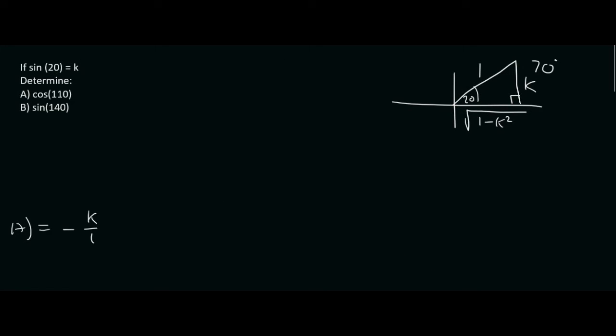Moving on to B, that's the sin of 140. So, we don't even look at our triangle for now. What we do is we just go and rewrite 140 as either 180 minus, 180 plus, or 360 minus. So, that's going to be 180 minus, now 180 minus what gives you that, it's 180 minus 40.